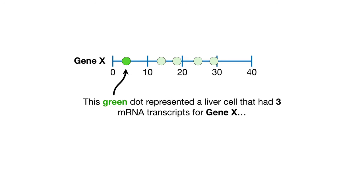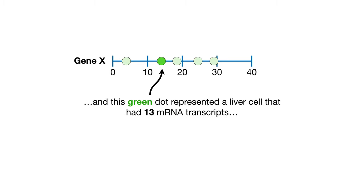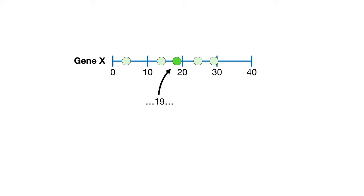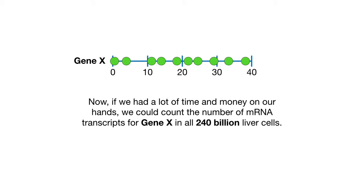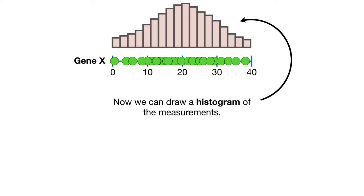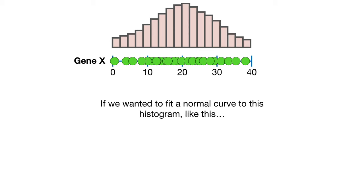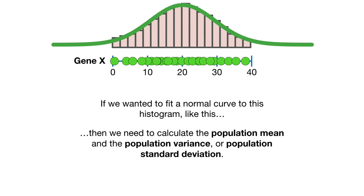This green dot represented a liver cell that had three mRNA transcripts for gene X. Now, if we had a lot of time and money on our hands, we could count the number of mRNA transcripts for gene X in all 240 billion liver cells. Now we can draw a histogram of the measurements. If we wanted to fit a normal curve to this histogram, then we need to calculate the population mean and the population variance or population standard deviation.